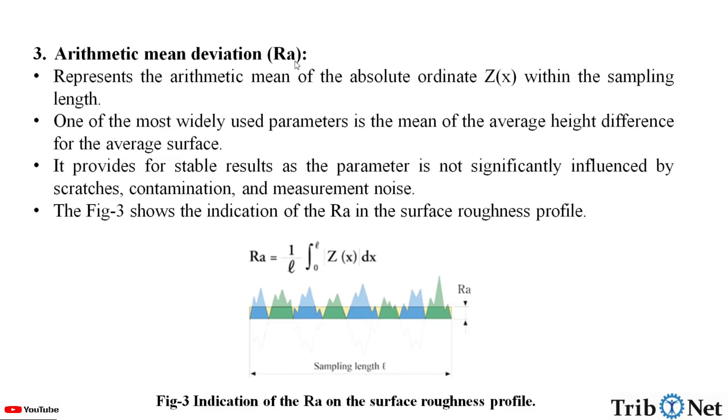Second one, arithmetic mean deviation, which is Ra, which represents the arithmetic mean of the absolute ordinate Z within the sampling length, one of the most widely used parameters which is the mean of the average height difference for the average surface. It provides for stable results as the parameter is not significantly influenced by scratches, contamination and measurement noise. In this figure, we can see the indication of Ra in the surface roughness profile.